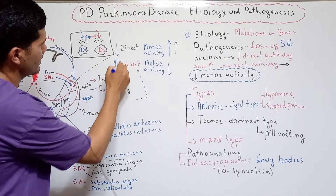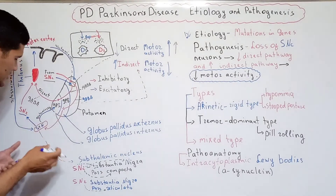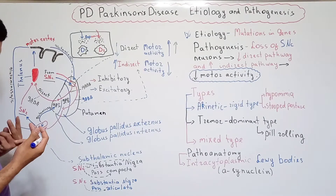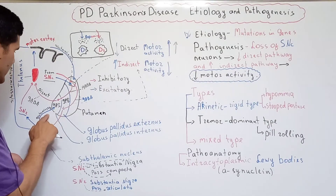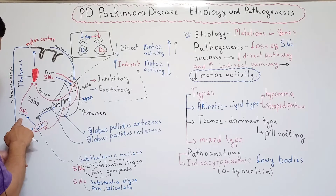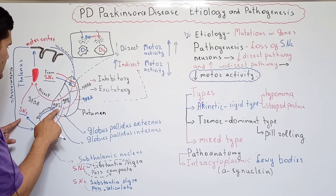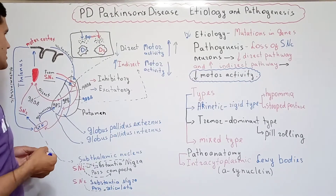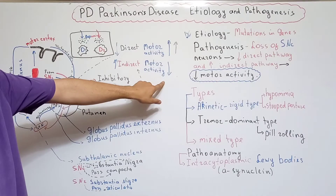Decreased direct pathway means increasing indirect pathway. The net result of the indirect pathway is disinhibition of the subthalamic nucleus. The subthalamic nucleus has two main functions: activating globus pallidus internus via the glutamatergic system, and activating Substantia Nigra Pars Reticulata. Both Substantia Nigra Pars Reticulata and globus pallidus internus cause inhibition of the thalamus. After inhibition, the thalamus cannot activate the motor cortex properly, and the net result is decreasing motor activity.